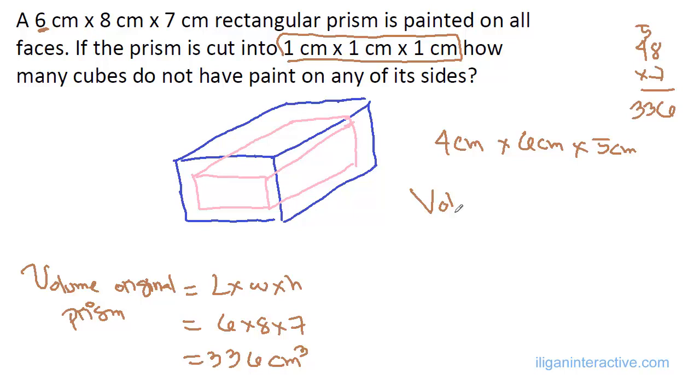Let's now find the volume of the smaller prism. That will lead to 4 times 6 times 5. 4 times 6 is 24. 24 times 5 is—just divide by 2 and add a 0—120.